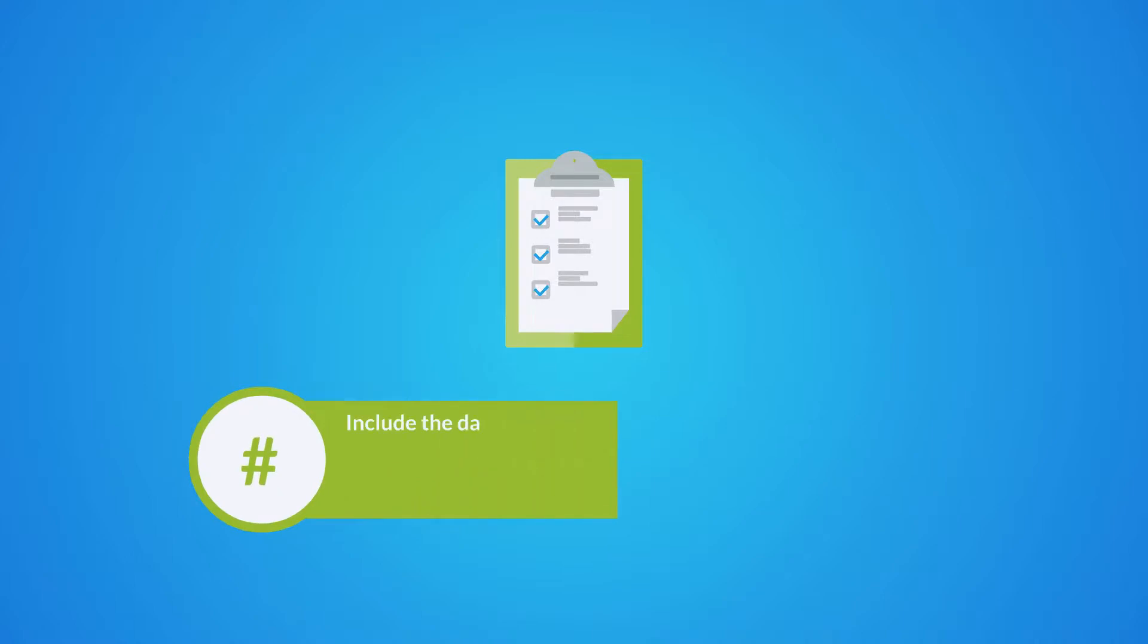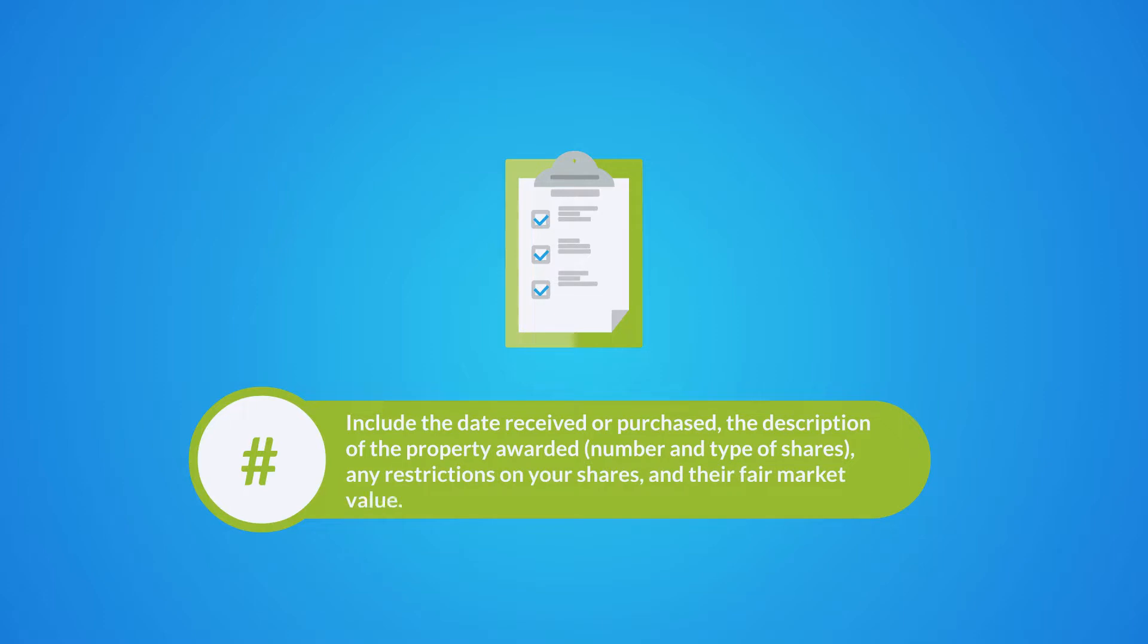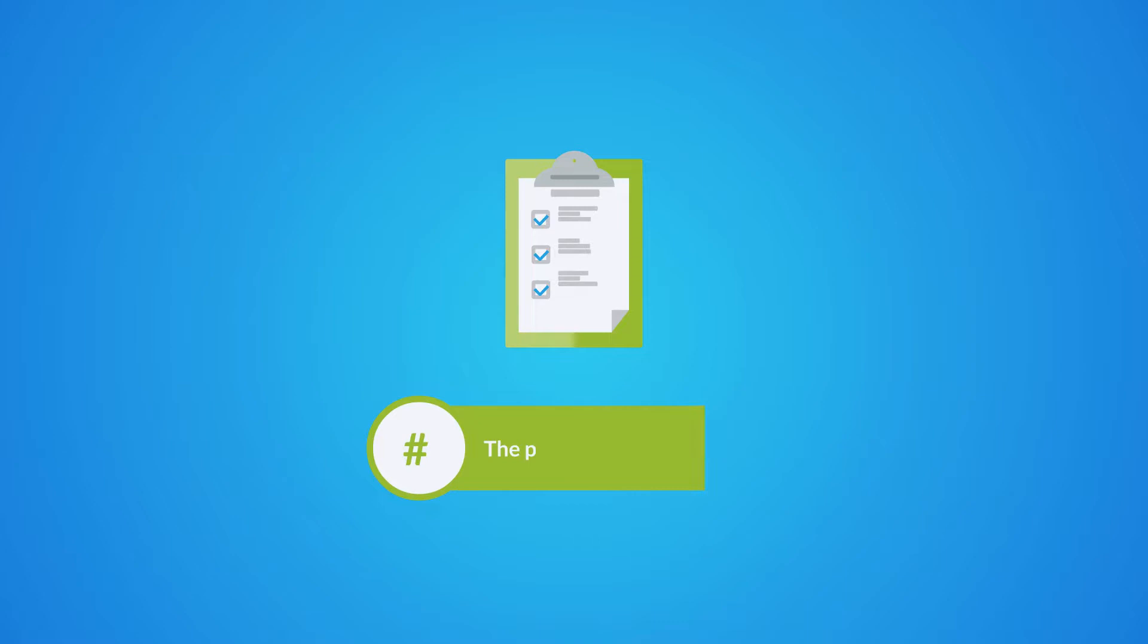Include the date received or purchased, the description of the property awarded, number and type of shares, any restrictions on your shares and their fair market value, the price of shares, and the employee's gross income.